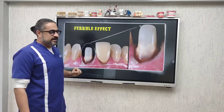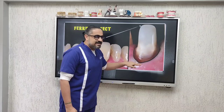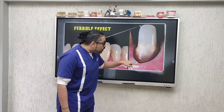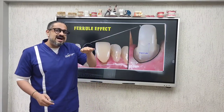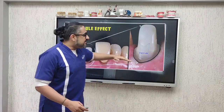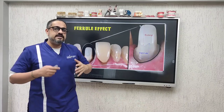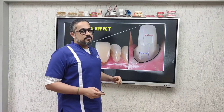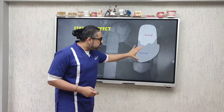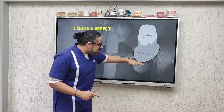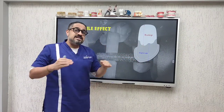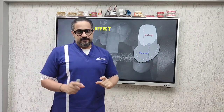Now what exactly is ferrule effect? If you look here, this is currently my gingival margin. The portion of the tooth that lies coronal to the margin is called the ferrule, and everything above that is your composite core buildup. The portion of the prepared abutment tooth that lies above the gingival margin is basically your ferrule.